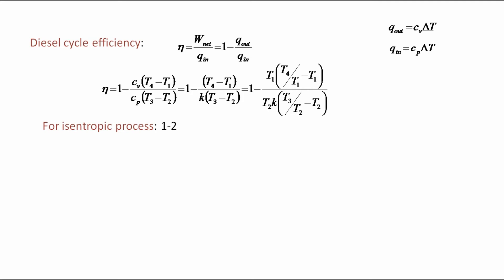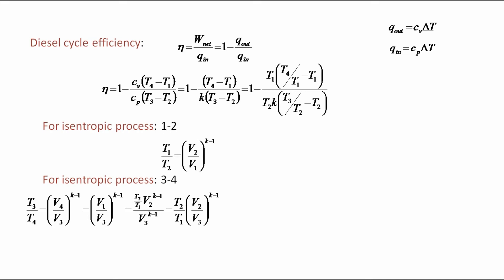For isentropic process 1 to 2, T1/T2 is equal to (V2/V1)^(k minus 1). For isentropic process 3 to 4 T3/T4 is equal to (V4/V3)^(k minus 1) which can also be written as (V1/V3)^(k minus 1) which can also be simplified as shown.